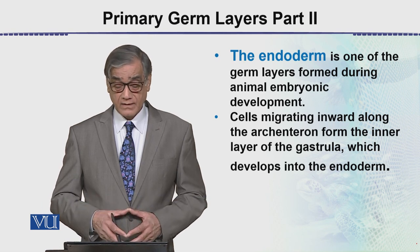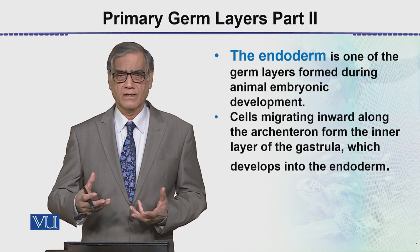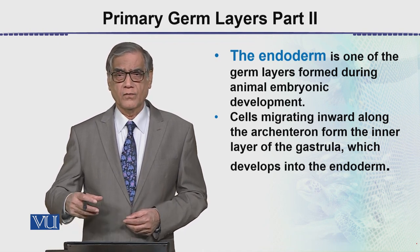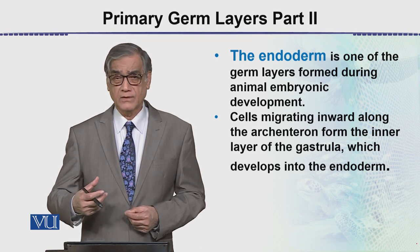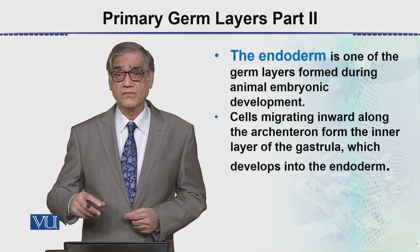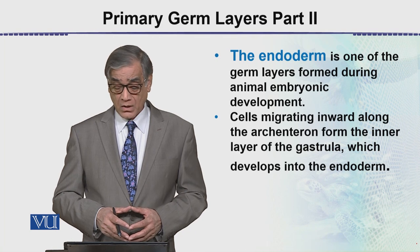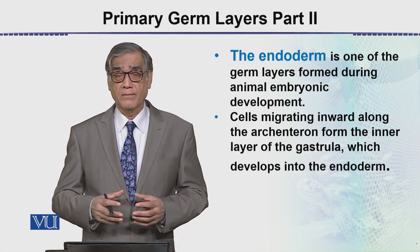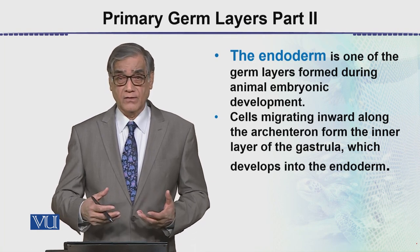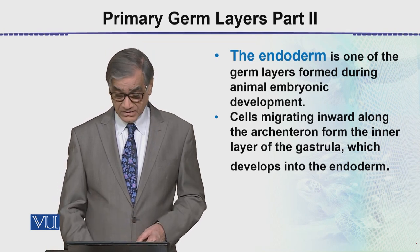Cells migrating inward along the archenteron — we have seen the archenteron — and it is called a depression, which is called invagination. These are the cells which are first outside and then they start moving inward. They then develop into the endoderm, which later on develops into the digestive tract and related structures.